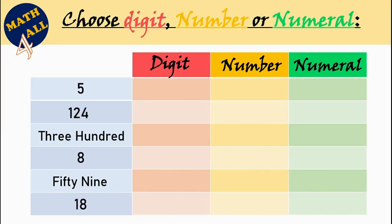Now, let's practice more on this lesson. Choose. Is it digit, number, or numeral? The first example. Five.